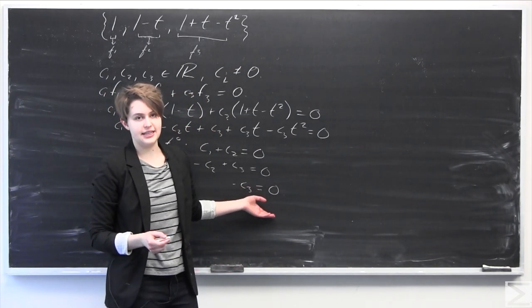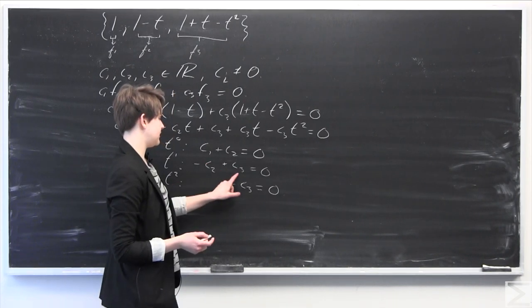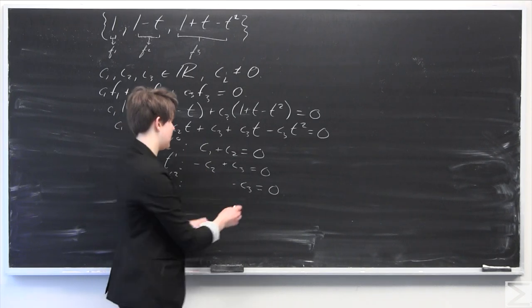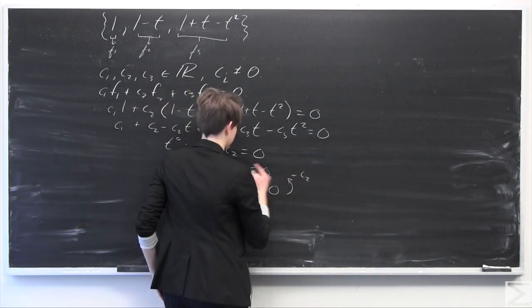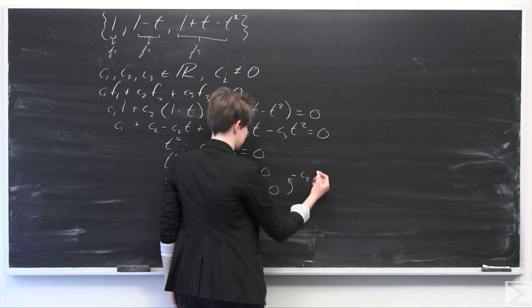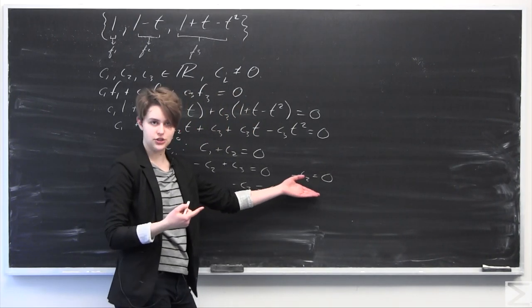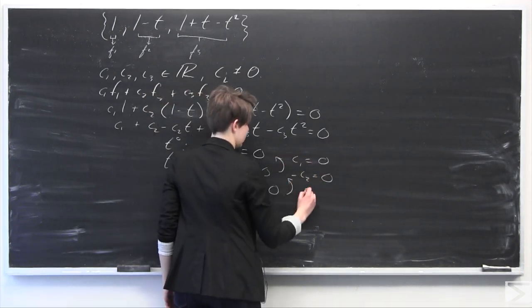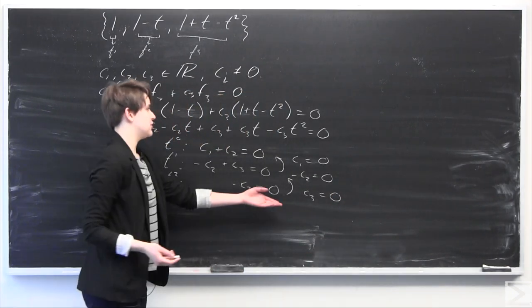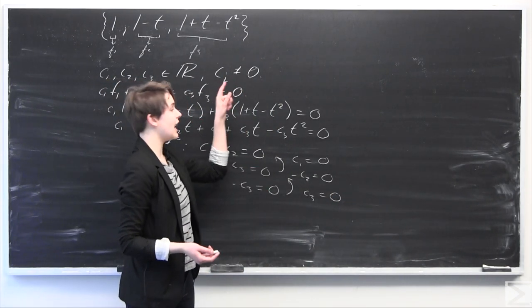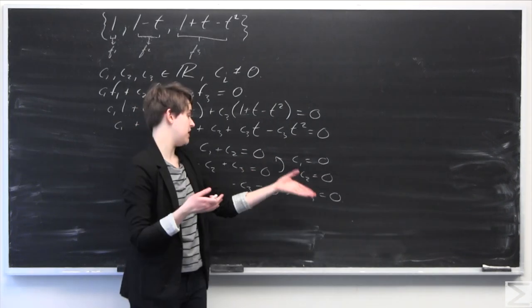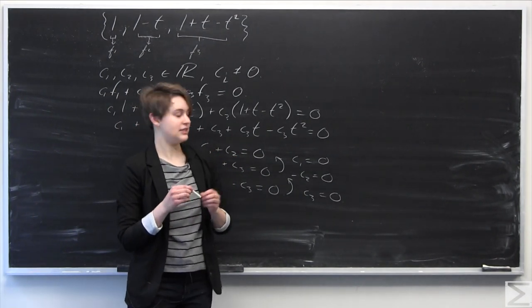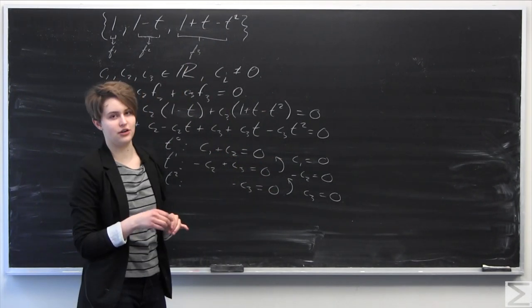From negative c3 equals 0, we can see that c3 equals 0. If c3 equals 0, then from negative c2 plus c3 equals 0, we get c2 equals 0. Plugging that back in, we get c1 also equals 0. This is a contradiction, because we assumed that the ci's could not all be equal to 0. Therefore, we have proved by contradiction that these three functions are linearly independent.